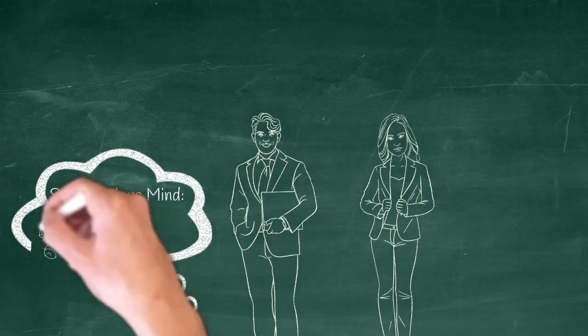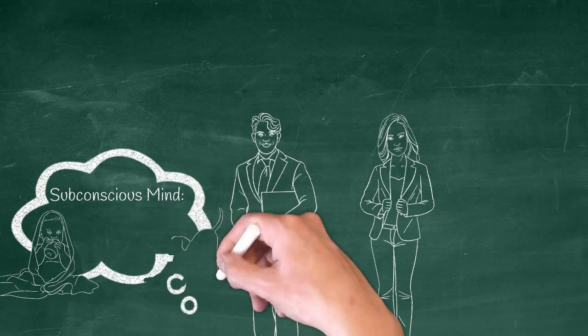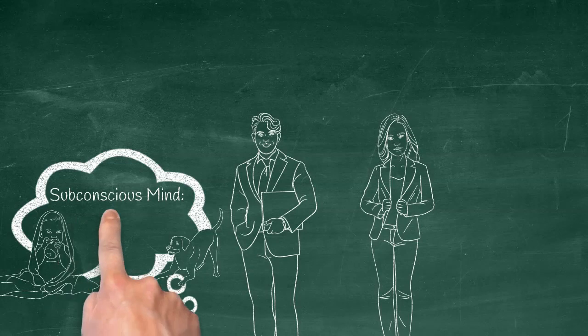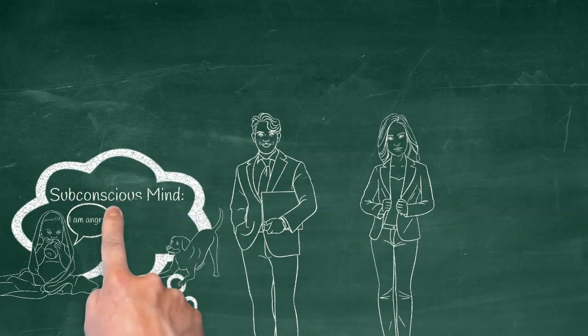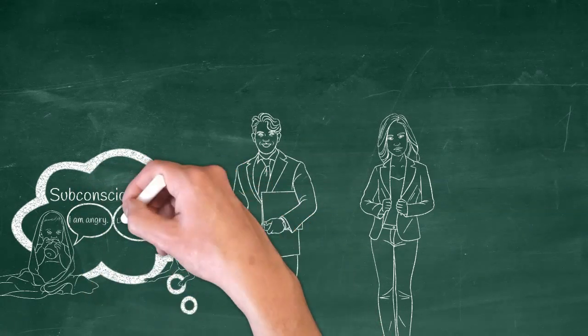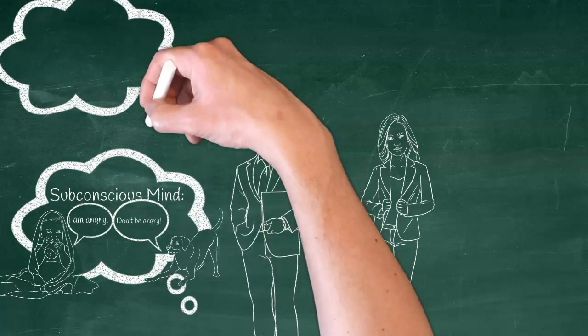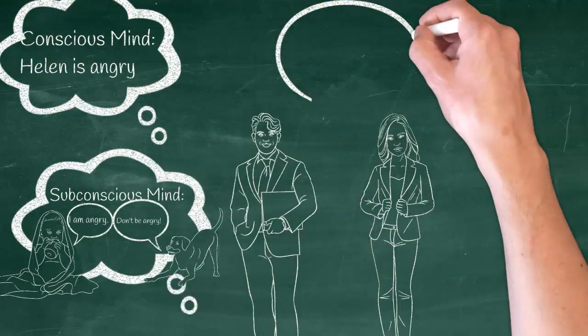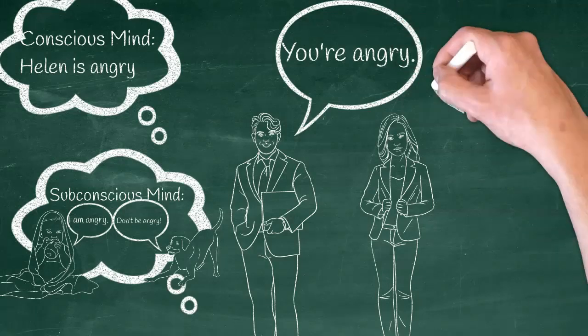So Brad's feeling angry in his underneath mind. But his super ego won't let him feel it. Probably because somewhere along the way, Brad was made to think that anger was bad. So what does he do? He displaces it onto Helen.